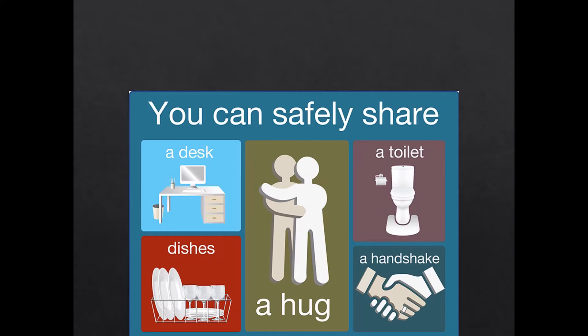You cannot get a bloodborne pathogen exposure from casual contact. Typical exposures in the workplace result from accidental puncture and cuts with a contaminated object, such as a needle or broken glass. Blood or other potentially infectious materials may also be splashed in your eyes, nose, or mouth, and you can also potentially be exposed through not using safe work practices that we will discuss later.